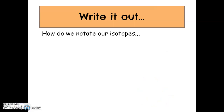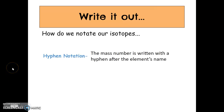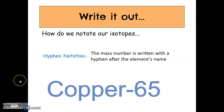When we notate our isotopes, there are a couple of different ways we can do this. The first way is with hyphen notation, where the mass number is written with a hyphen after the element's name. For example, here we have copper-65. This is our element copper, and the 65 lets us know that the mass of that atom of copper is 65 AMU. So the hyphenated symbol tells us the atomic mass. This mass number is the protons plus the neutrons.